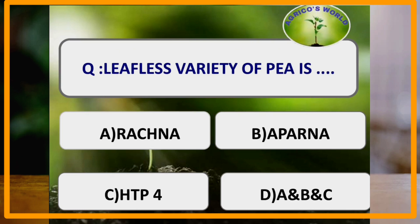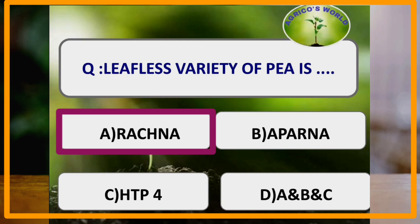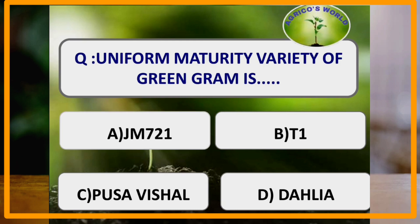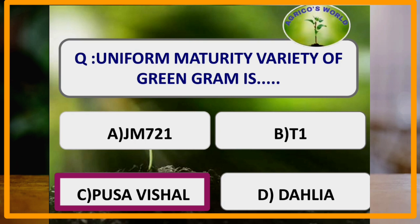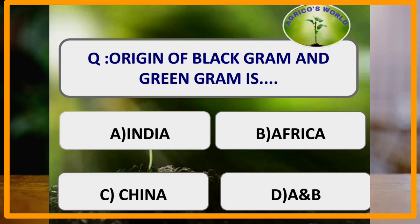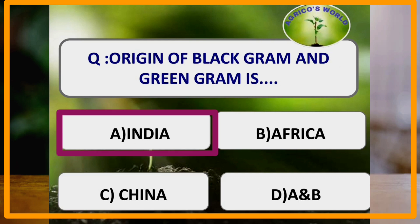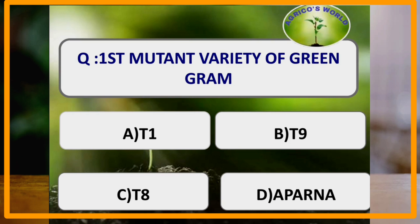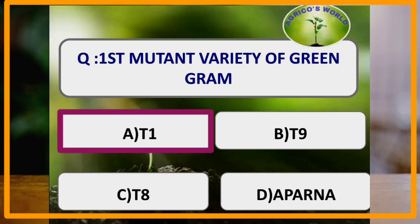Leafless variety of pea is Rachana. Uniform maturity variety of green gram is Pusa Vishal. Origin of black gram and green gram is India — both are originated from India. First mutant variety of green gram is T1, and in black gram the first mutant variety is T9.